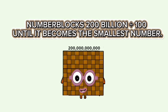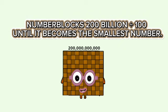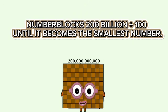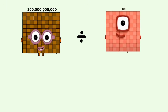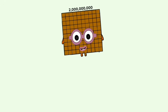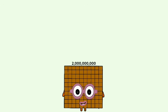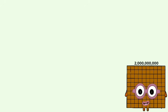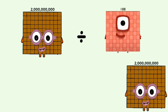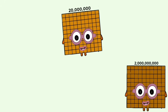Number Blocks: 200 billion divided by 100, until it becomes the smallest number. 200 billion divided by 100 equals 2 billion. 2 billion divided by 100 equals 20 million.